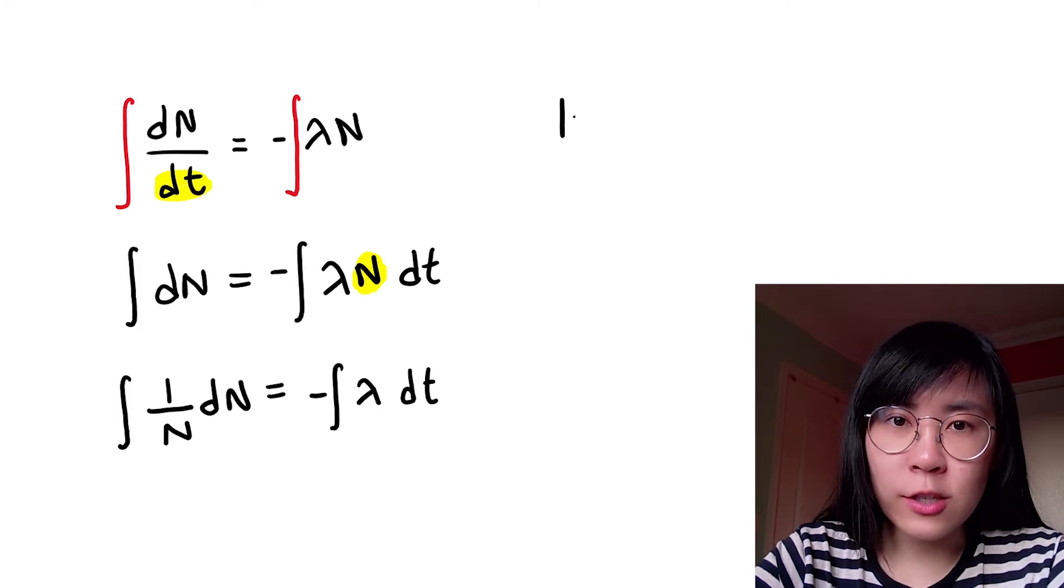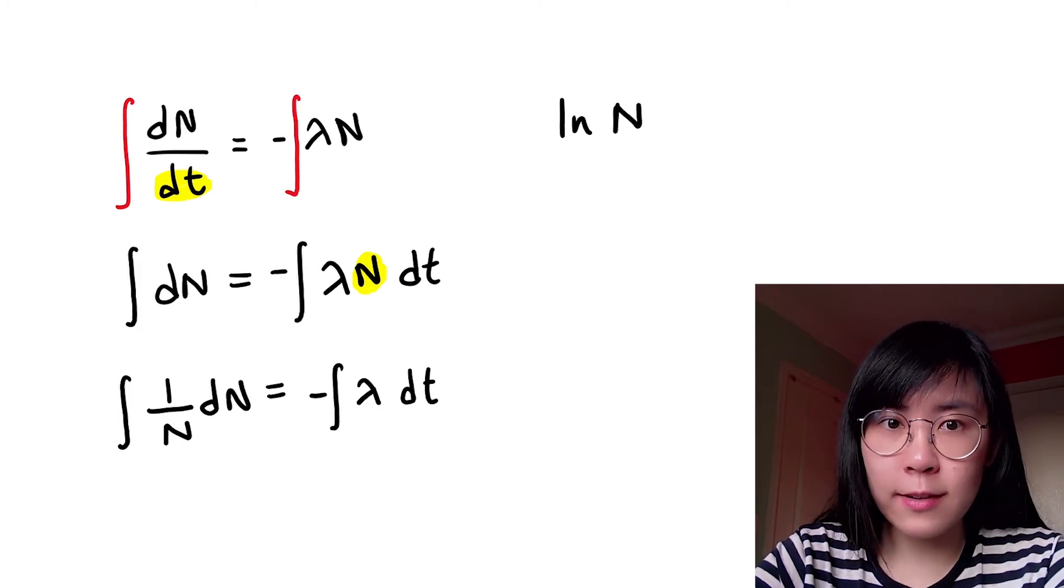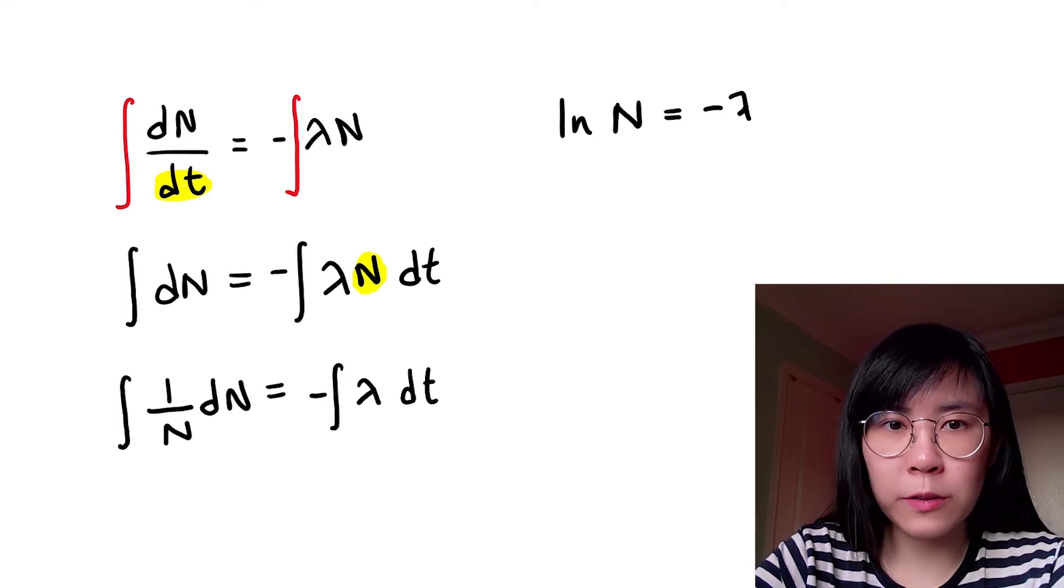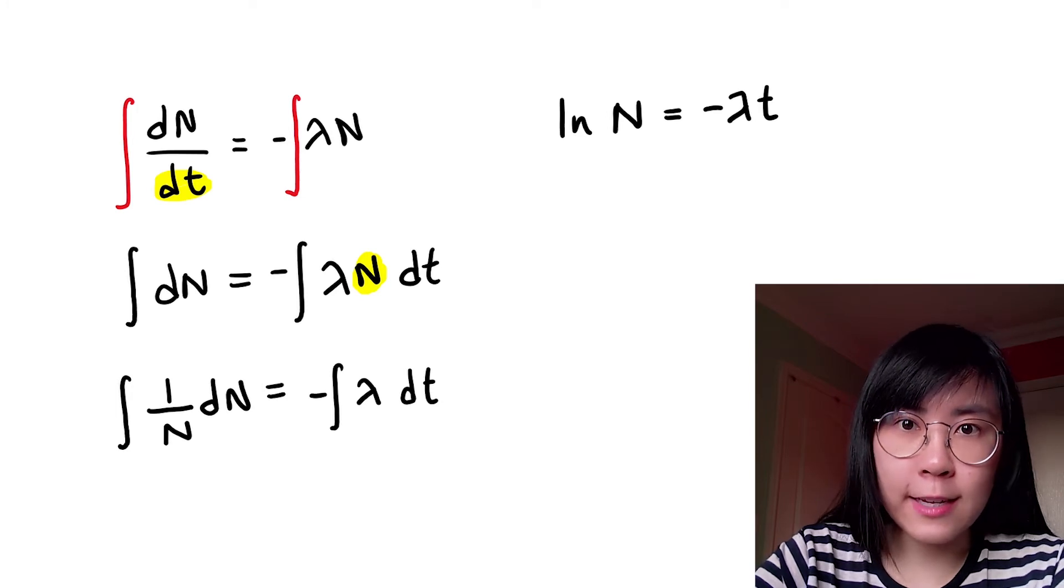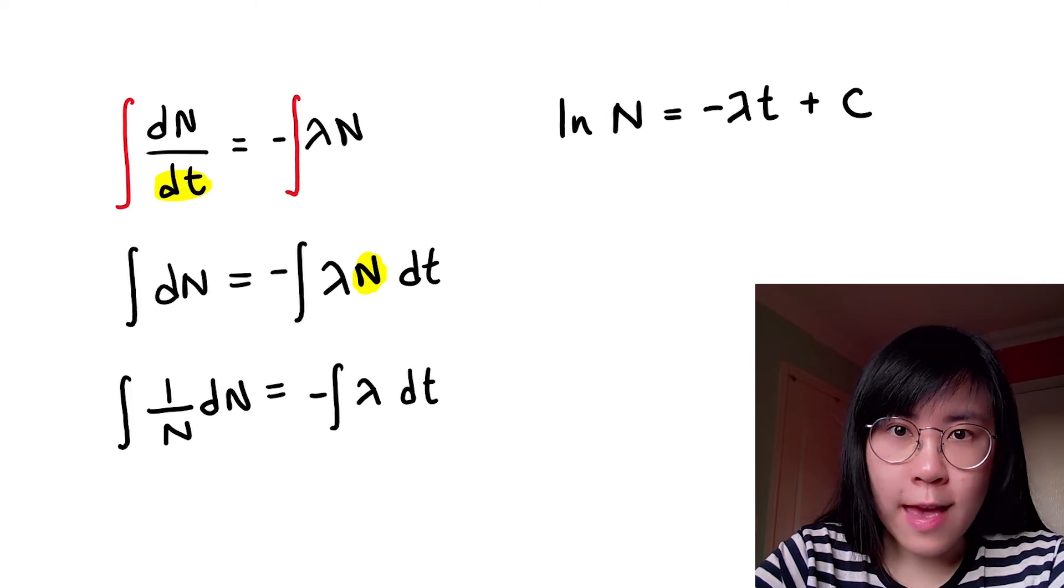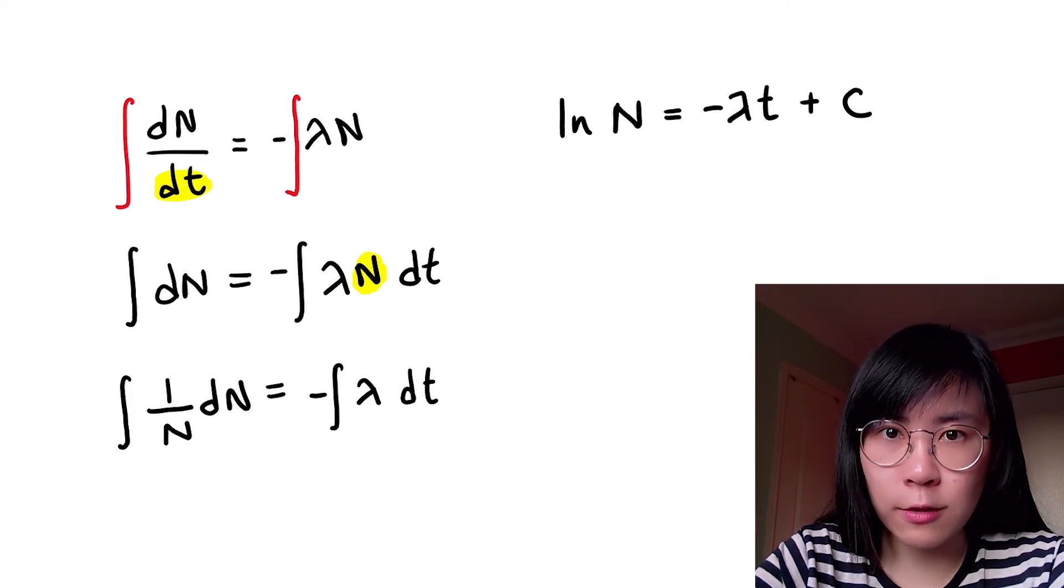Integrating 1 over N is just the natural log of N. And on the right hand side integrating a constant by dt means that we just have to multiply this constant by t. But we also have to add c to it where c is a new constant and we call this the constant of integration.